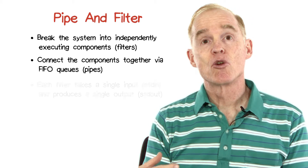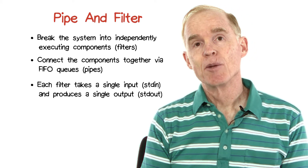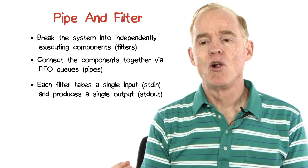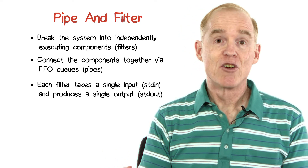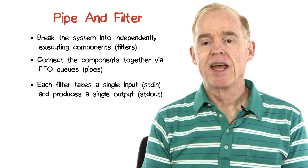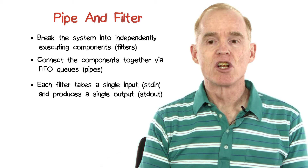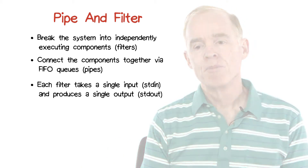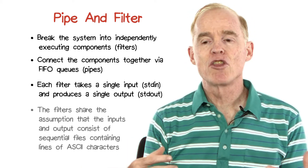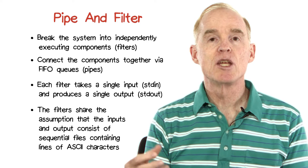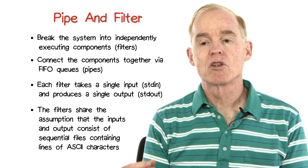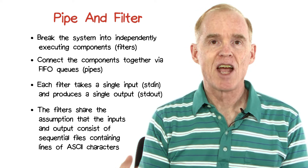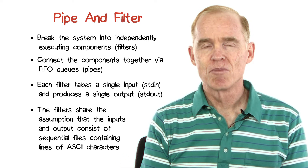Each of the filters is going to take a single input, which has become called the standard input, and it's going to produce a single output, which has now been called the standard output. The filters share the assumption that the inputs and output consist of sequential files containing lines of ASCII characters.